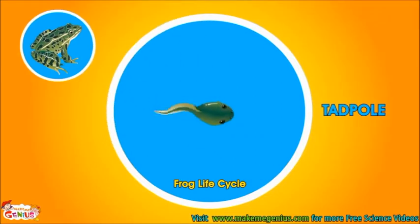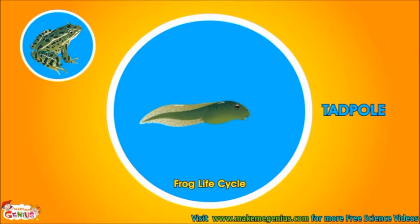See this tadpole? It is the baby of a frog. But it does not look like a frog — it does not have legs. It has a tail and it swims like a fish in the water.